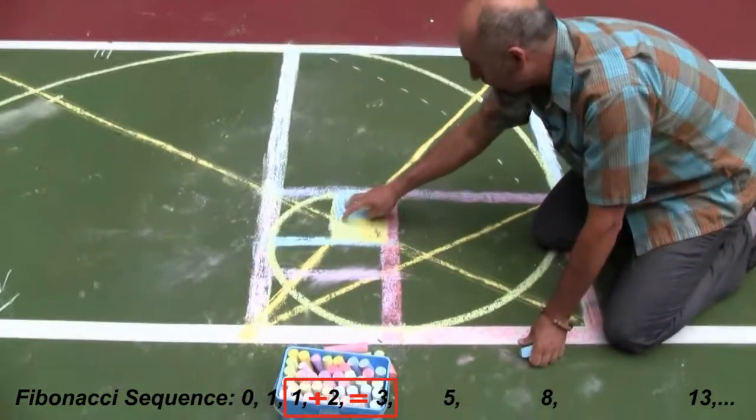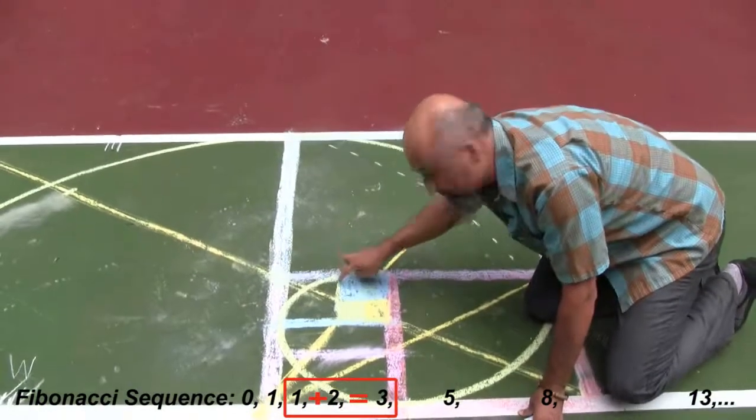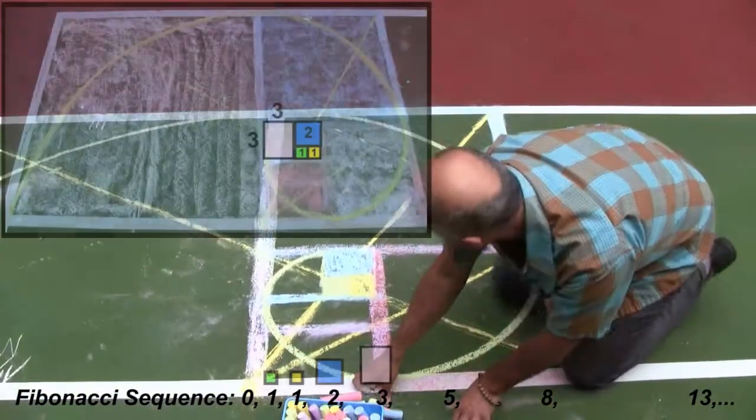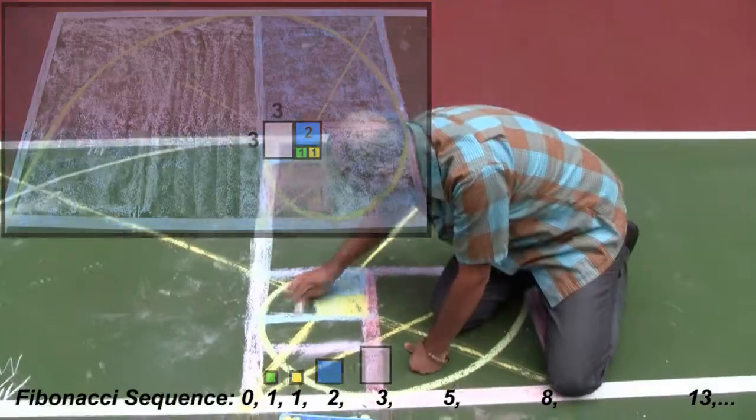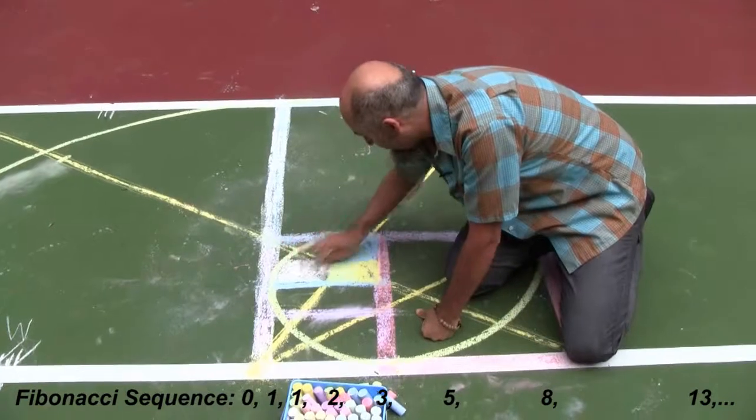So one plus two is three, and this becomes a three by three square. So let's use whatever this is, pinkish. We're going to make a three by three square.